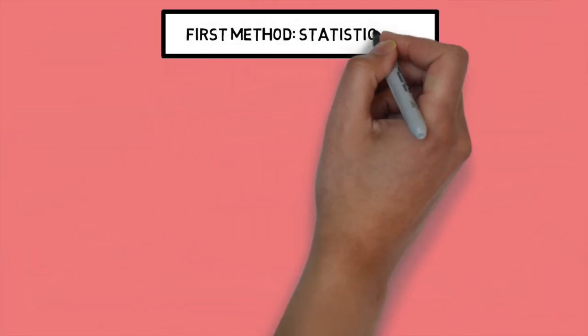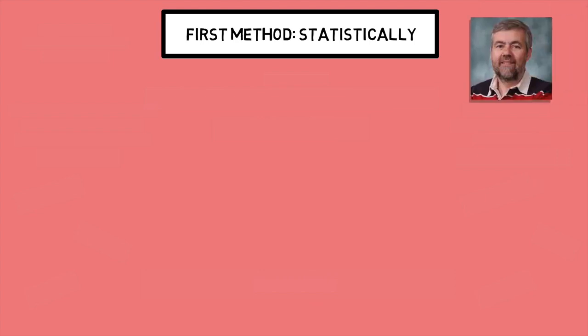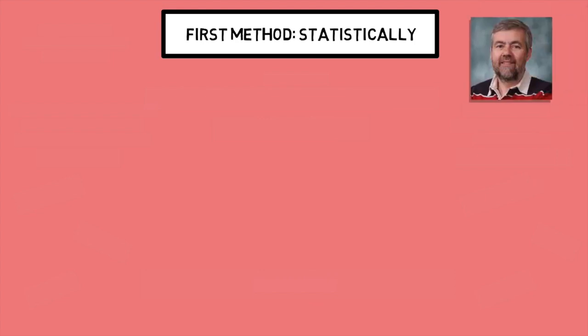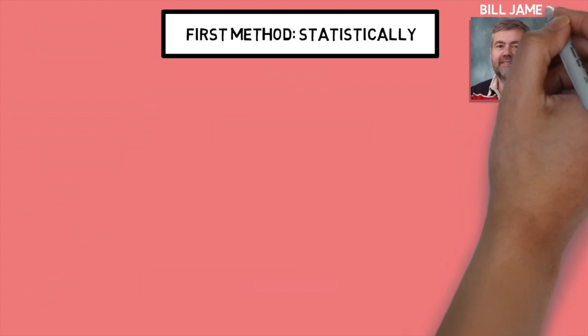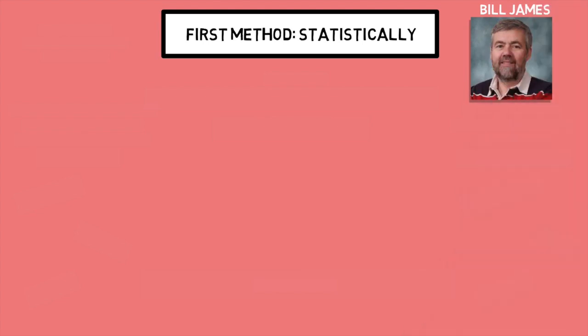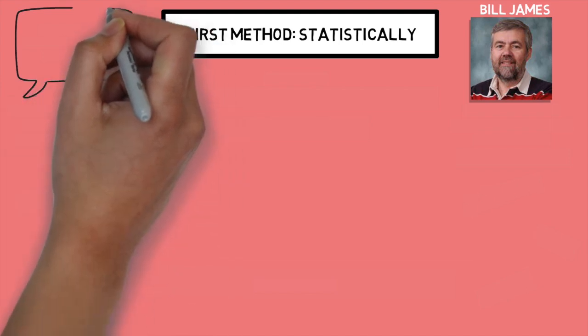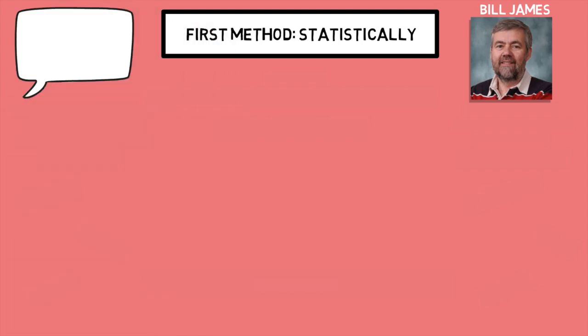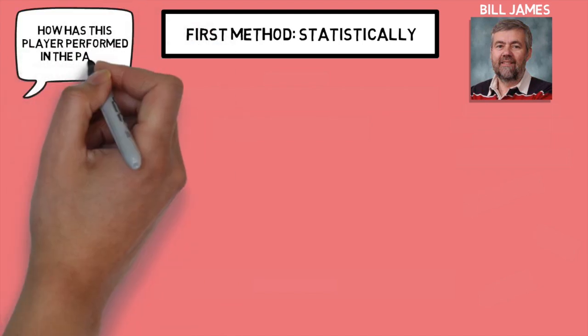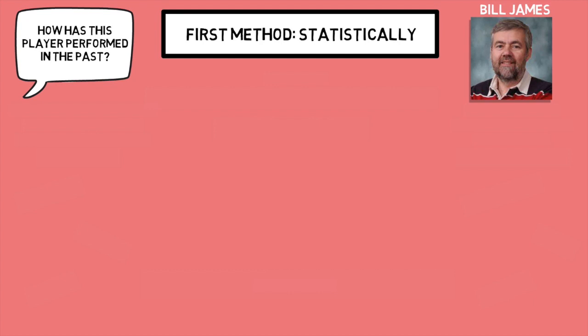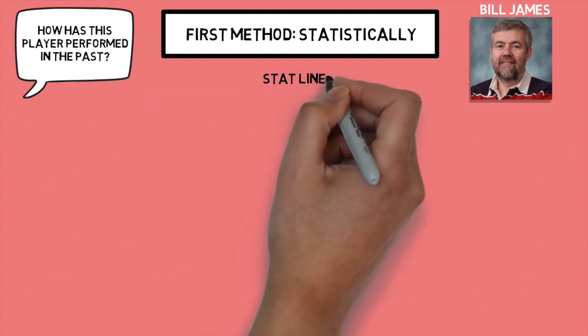Our first method is going to be the oldest, and that is statistically. Thanks to many brilliantly-minded folk such as Bill James, the use of statistics to analyze a player's performance has become much more common than it was in the early days. The goal of using statistics to analyze a player is to understand how a player is, or can be, performing based off of his past performances.